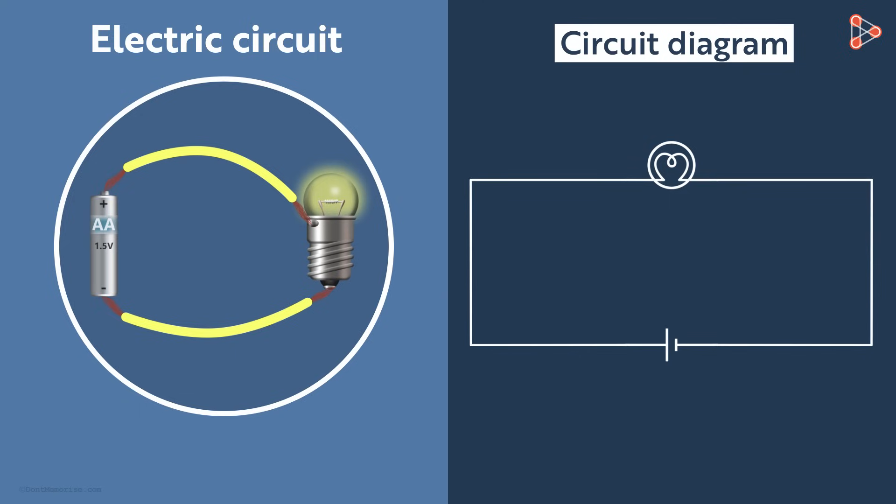It was simple to draw wasn't it? You can even show the direction of electric current in the circuit with arrowheads. So the electric current is flowing in this direction from the positive to the negative terminal of the cell.